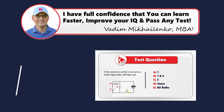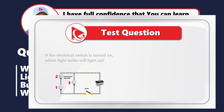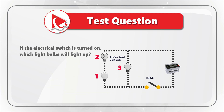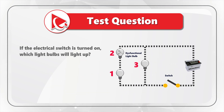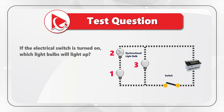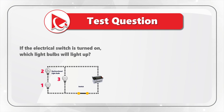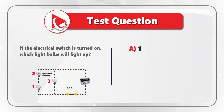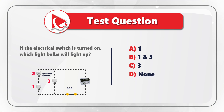Here is an amazing question where you need to determine what is going to happen based on a diagram. You are presented with an electrical diagram which contains three bulbs, an electricity generator, and one switch. You need to determine if the electrical switch is turned on, which light bulbs will light up. Choice A: light bulb 1. Choice B: light bulbs 1 and 3. Choice C: light bulb 3. Choice D: none of the light bulbs. And last but not least, Choice E: all of the light bulbs.